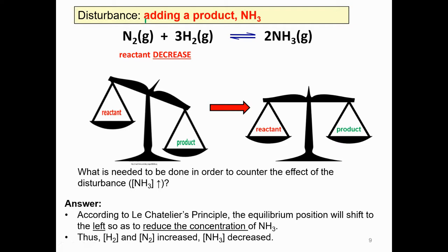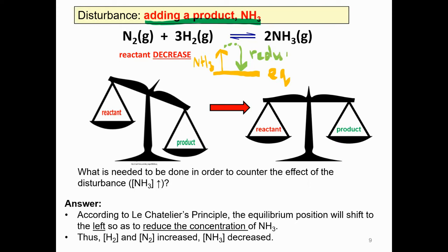Now another example: if you add a product. Using the same method — this is equilibrium. I have added a product; my product is ammonia, so the arrow goes up. To get back to equilibrium, I need to go down, which means reduce ammonia. To reduce ammonia, I look at which side has no ammonia — that is the left side. So according to Le Châtelier's Principle, the equilibrium position shifts to the left to reduce the concentration of ammonia. Thus, reactant increases and product decreases.